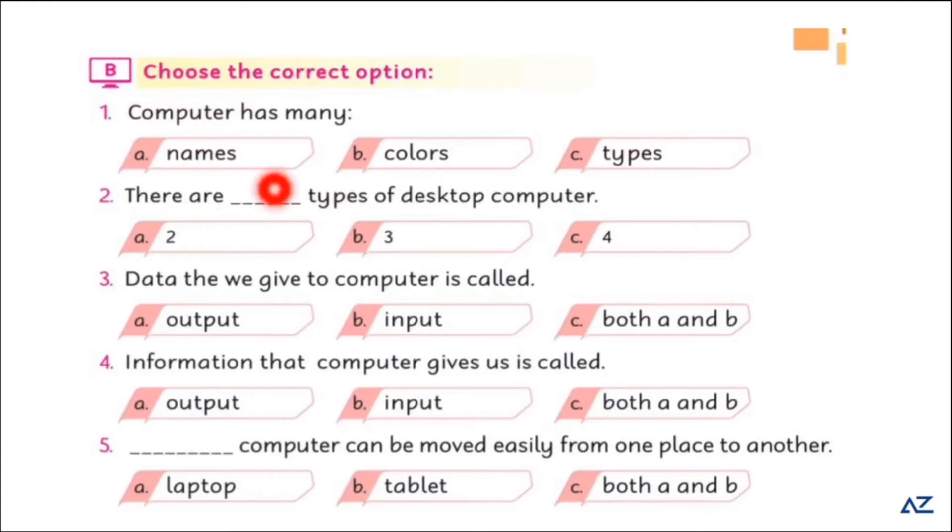Data that we use, data we give to computer is called input. Information that computer gives us is called output. Laptop computer can be moved easily from a place to another. Kids, laptop and tablet computer can be moved easily from one place to another.